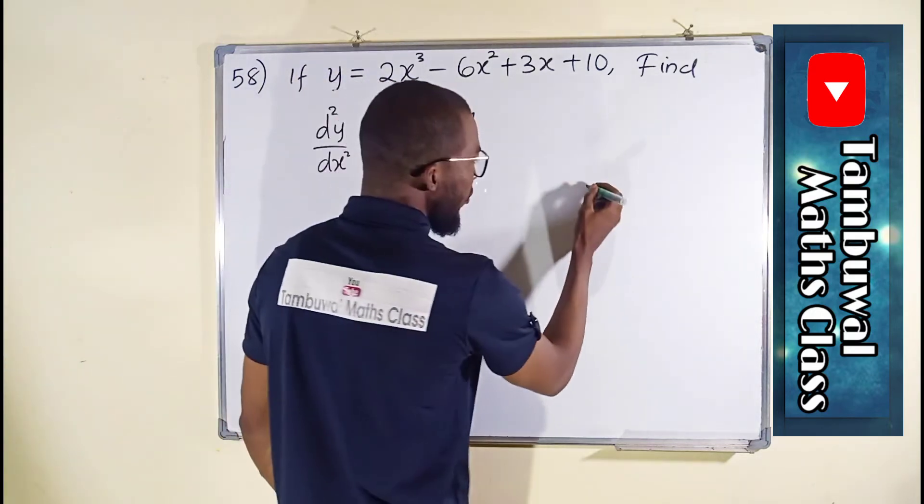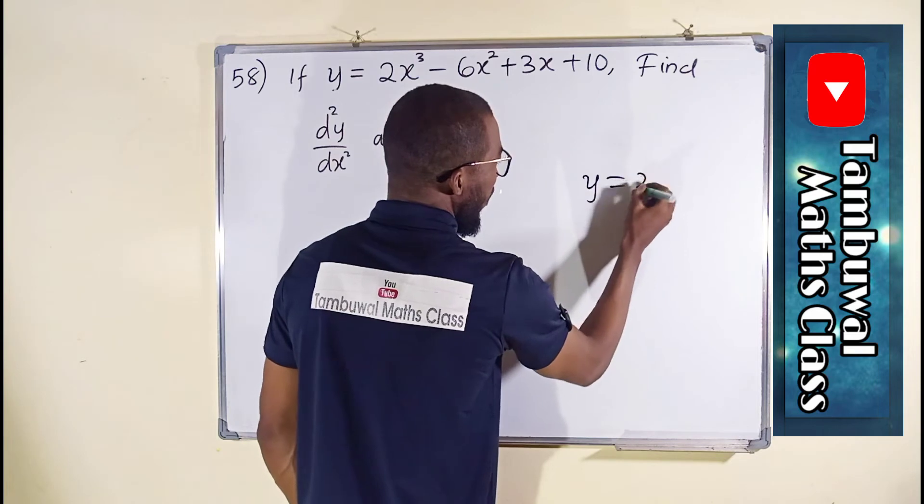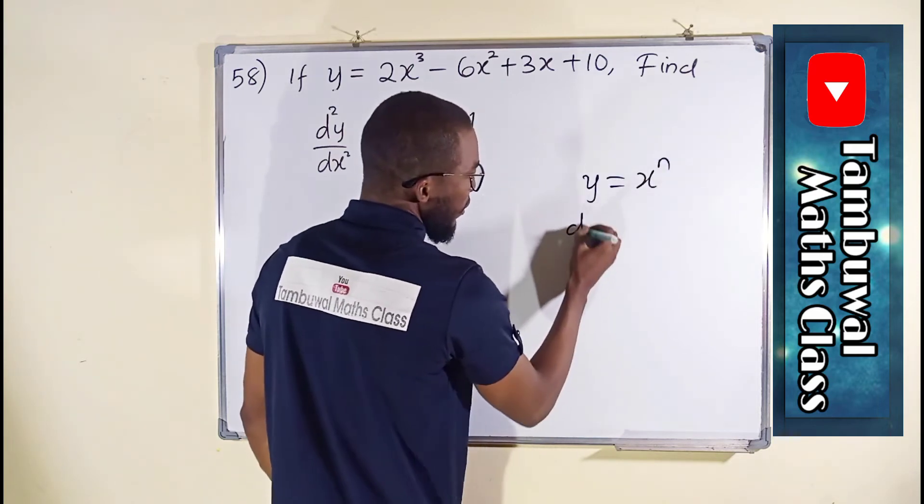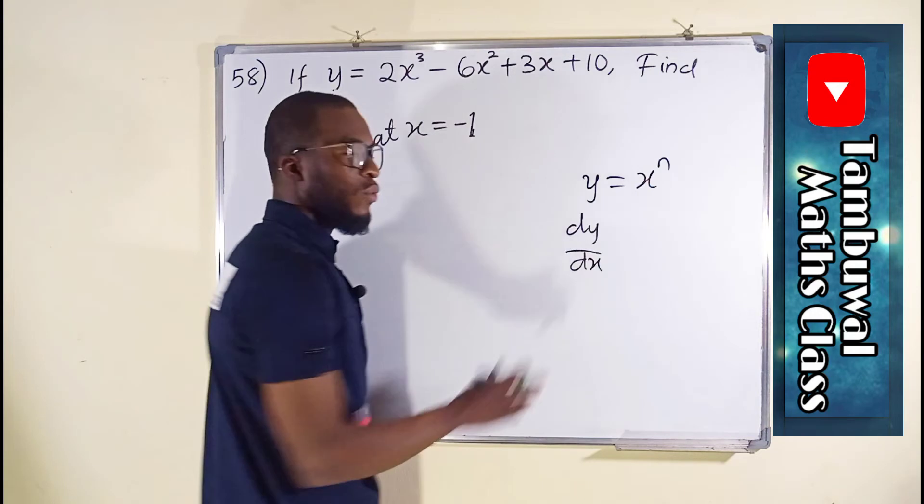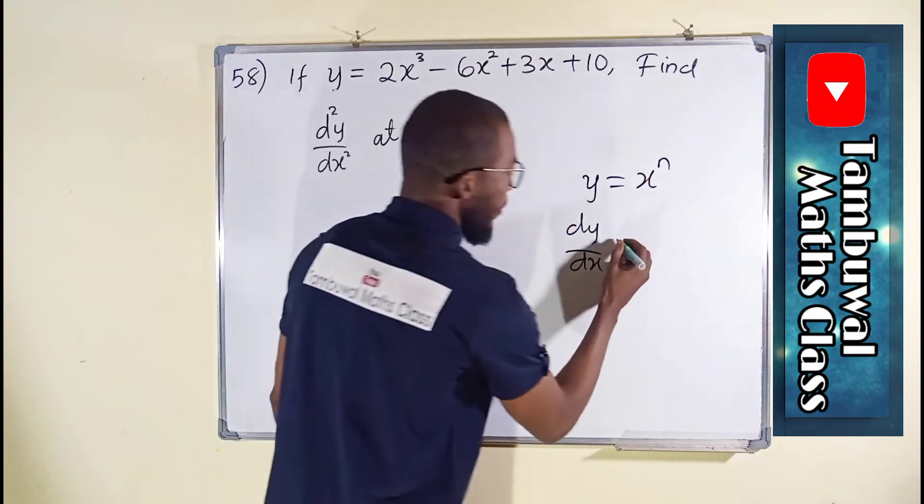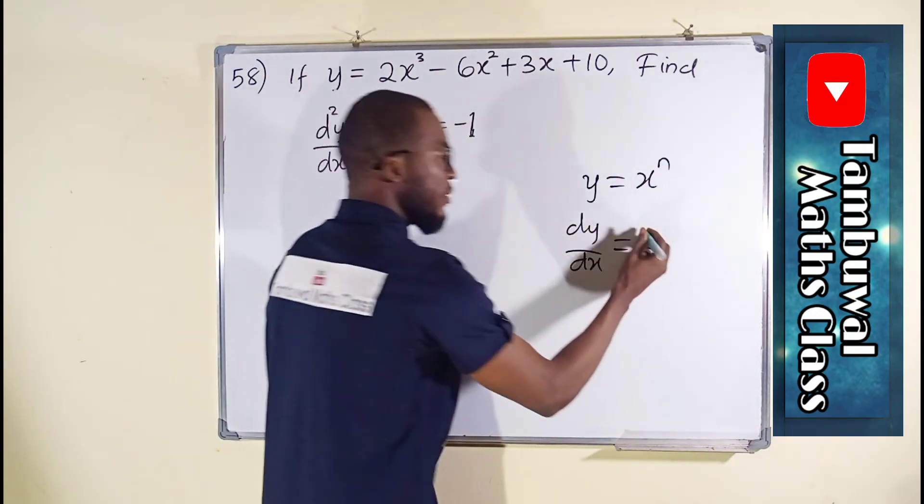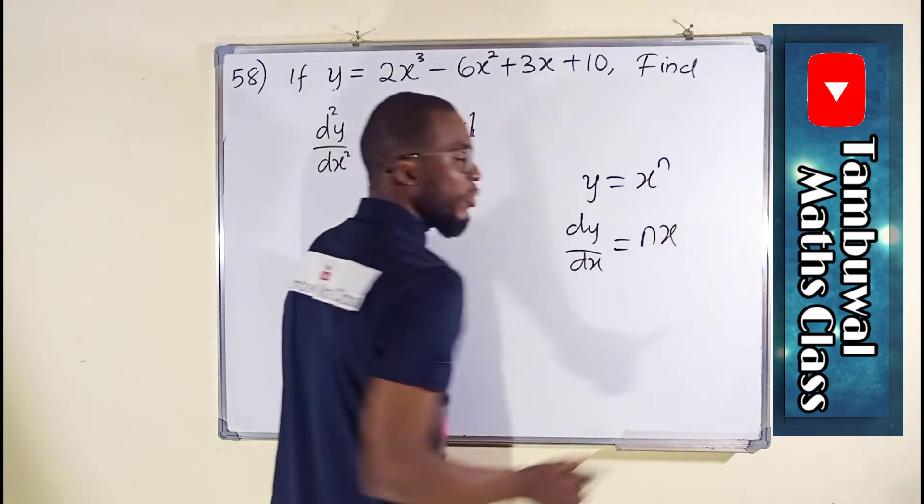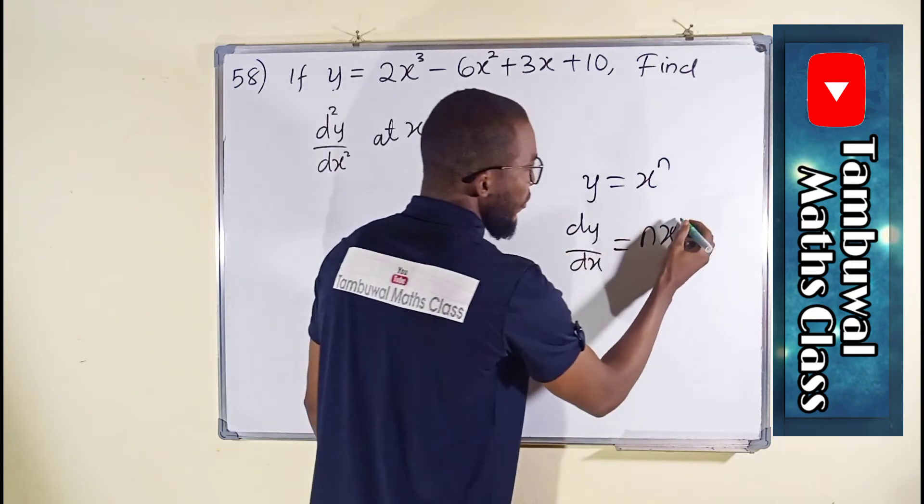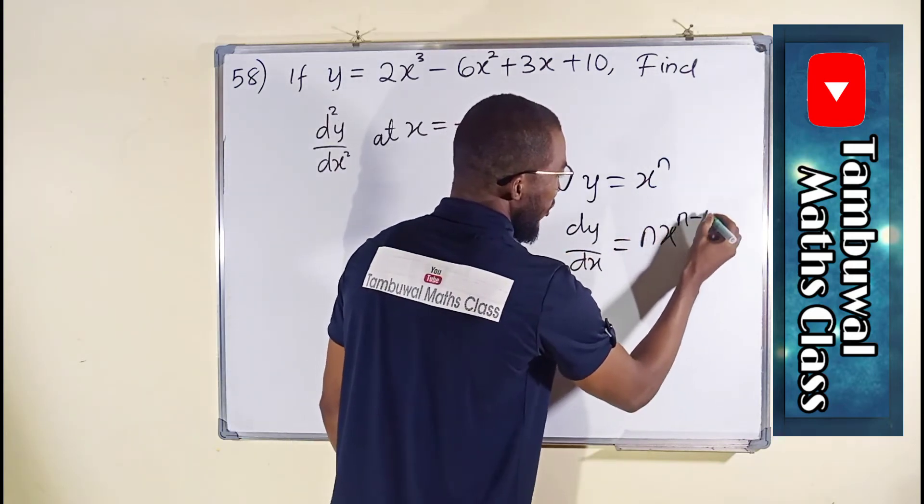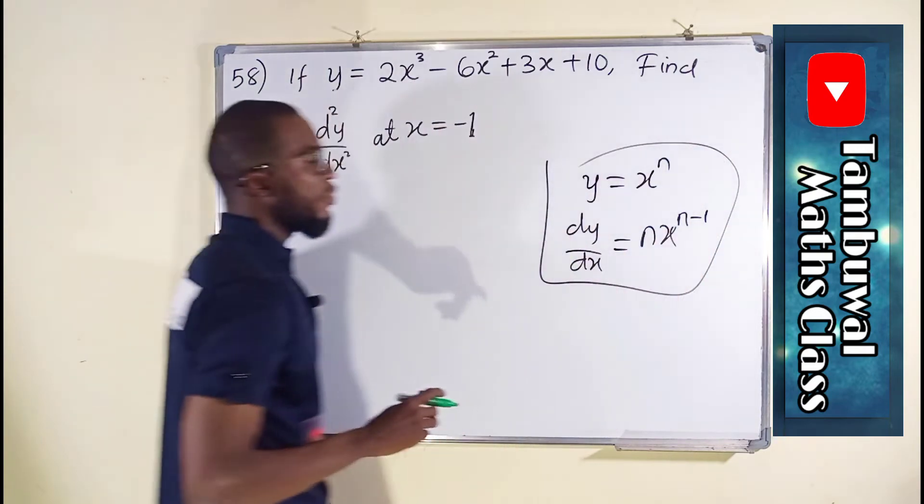So if y equals this, remember the general formula: if y equals x to the power n, then dy over dx, which is change in y with respect to x, is equal to n times x to the power n minus 1. This n will drop down, it will multiply the x, and whatever value that n is, you have to subtract 1. So this is the general formula.